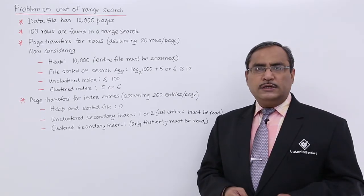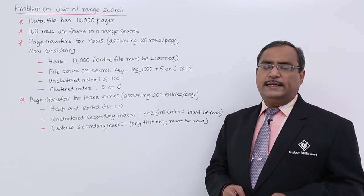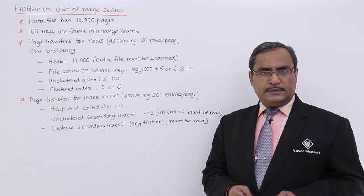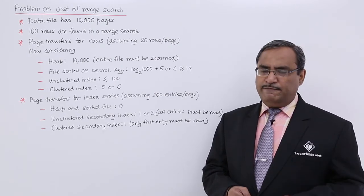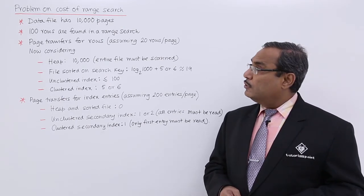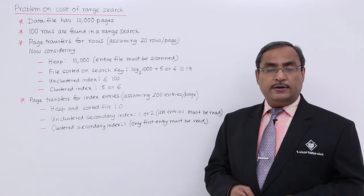Now if we consider the heap file, then we know that here the entire file has to be scanned. That means all the 10,000 number of pages whatever are there in the heap file, all of them are to be scanned to retrieve the required data for those 100 number of rows which are selected in the range search.